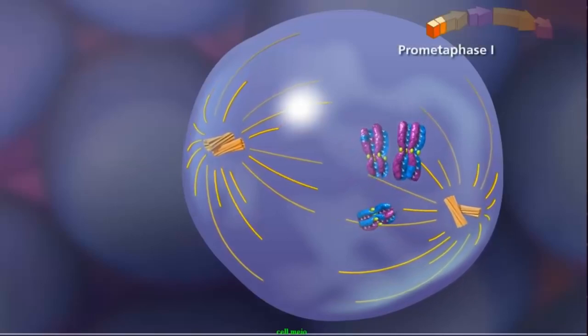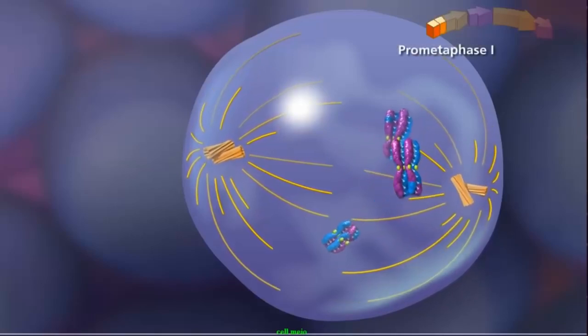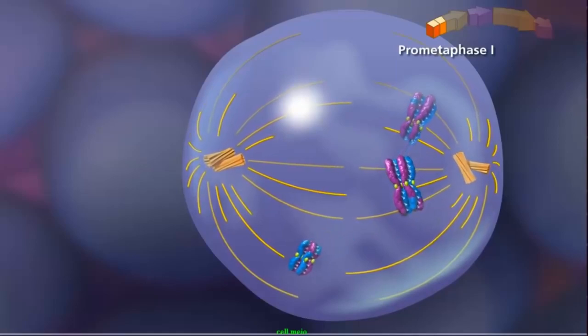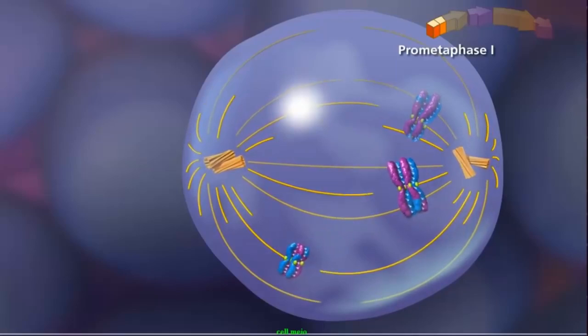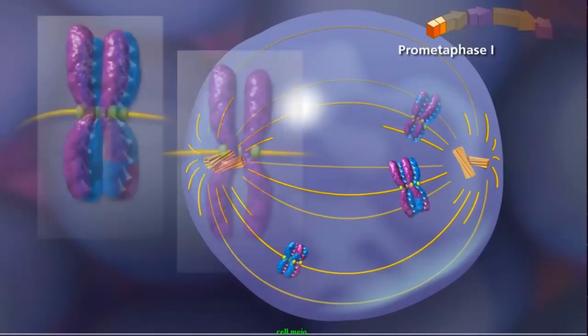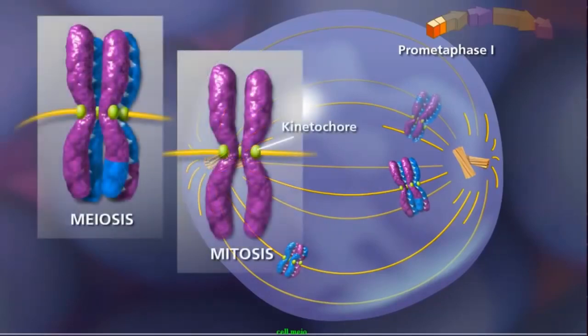In prometaphase I, with the paired centrioles in place, the meiotic spindle is fully formed. The sister chromatids attach to the spindle fibers by their kinetochores. Here another key difference between mitosis and meiosis occurs.